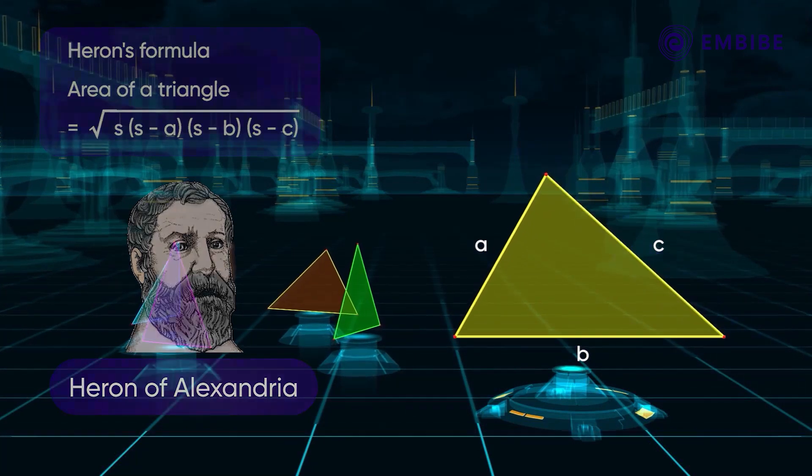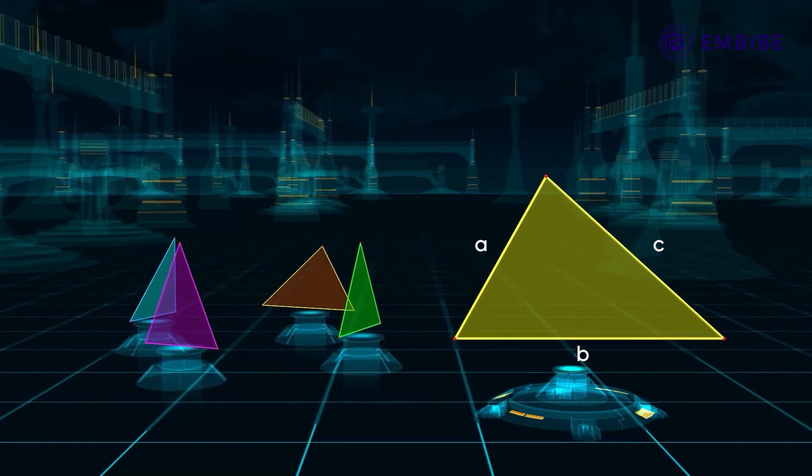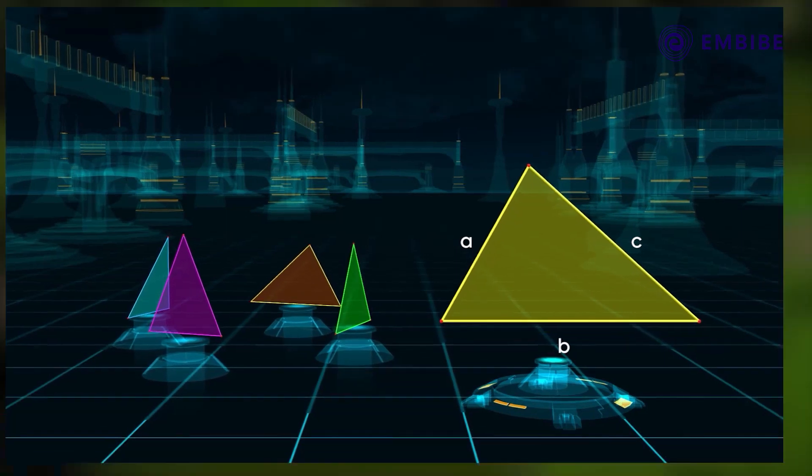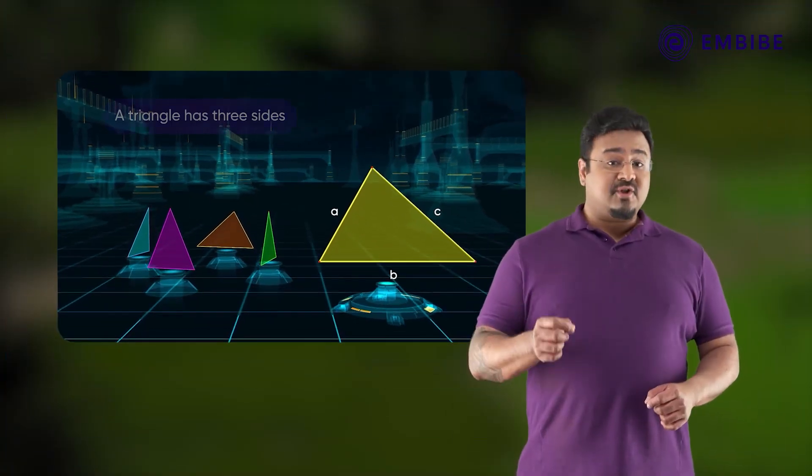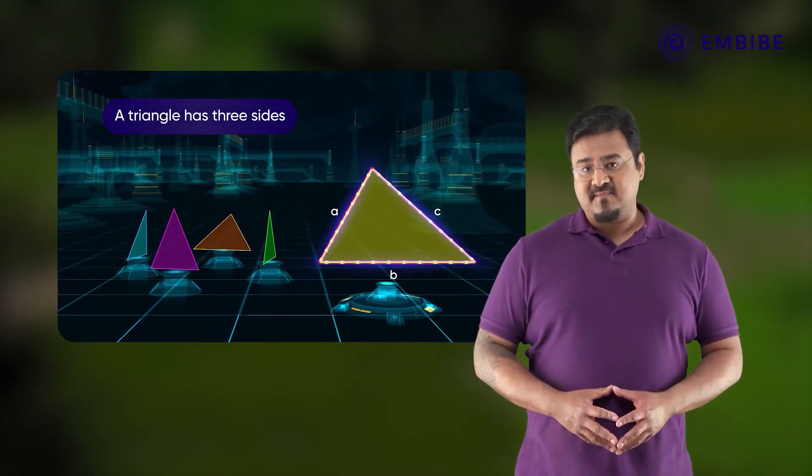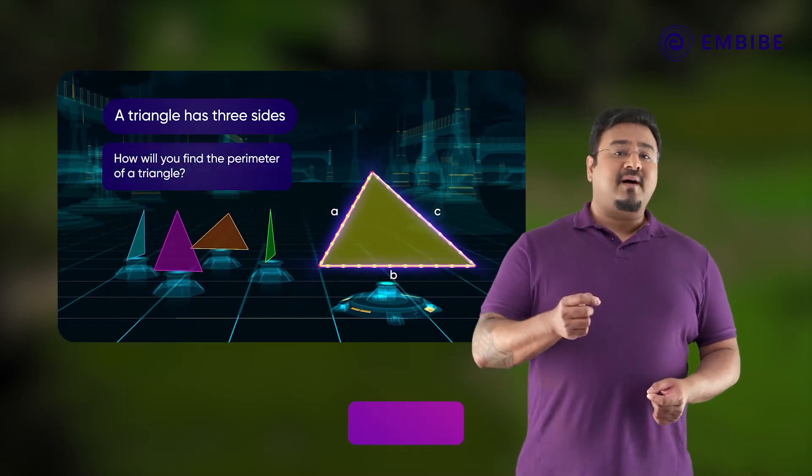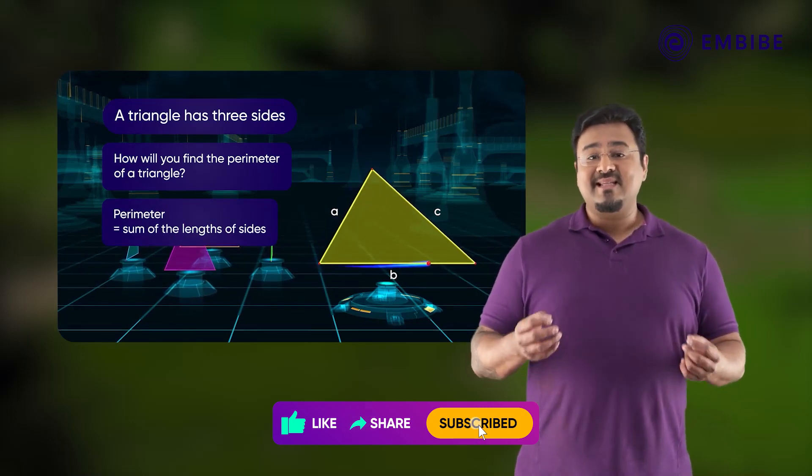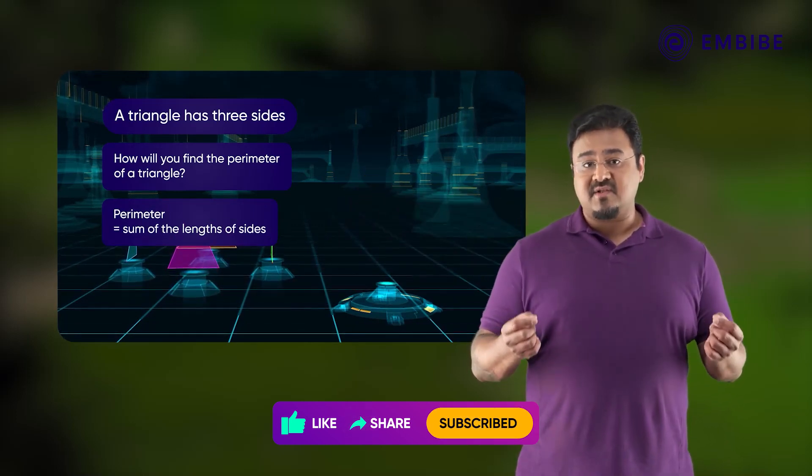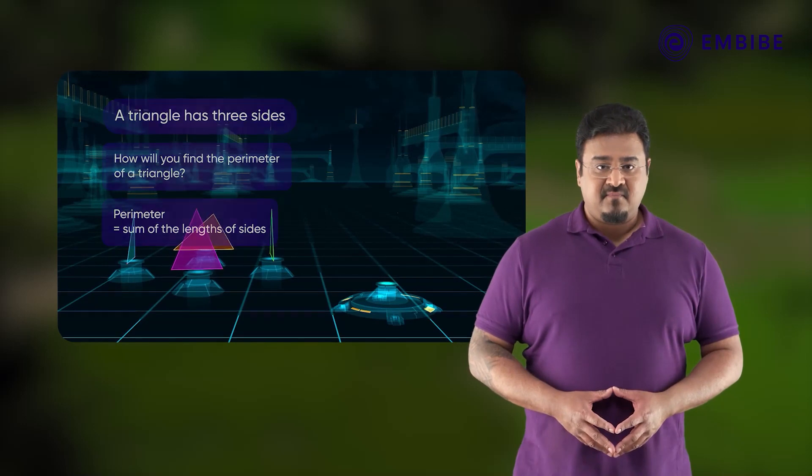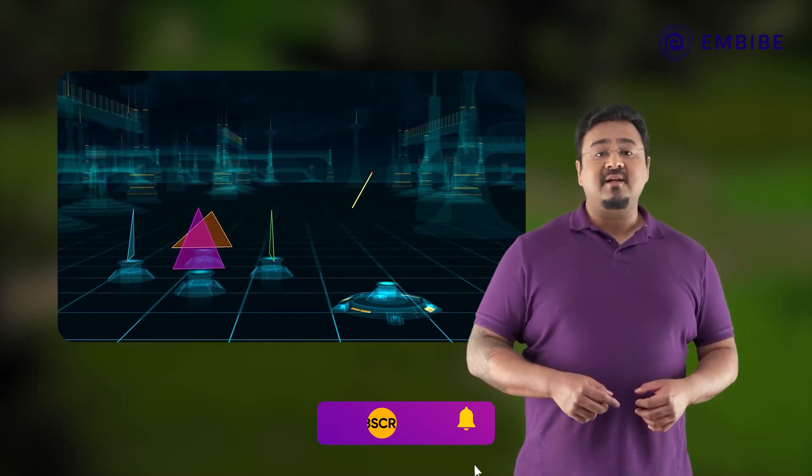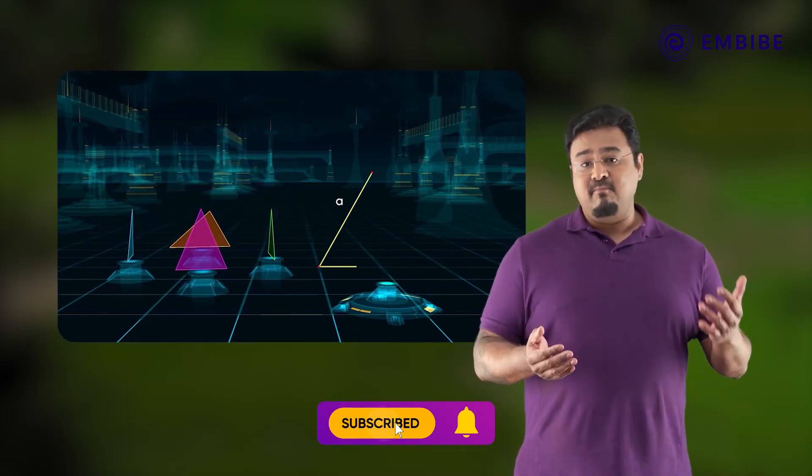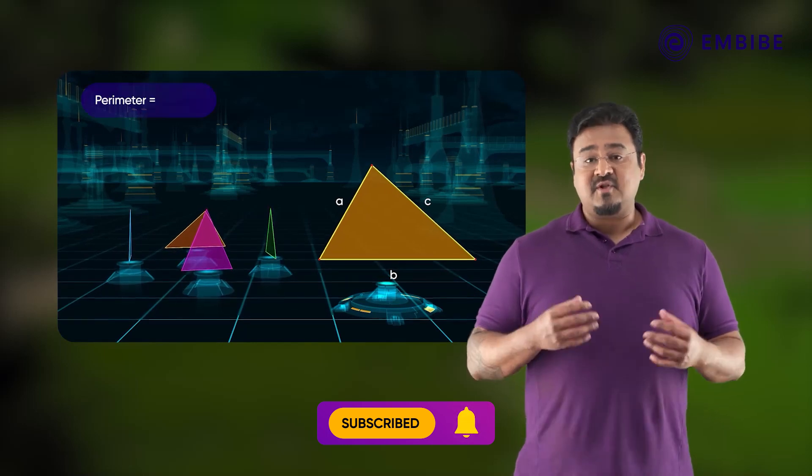Before understanding Heron's formula in detail, let us recollect a few facts about a triangle. We know that a triangle has three sides. How will you find the perimeter of a triangle? The perimeter of a triangle is given by the sum of the lengths of its sides.